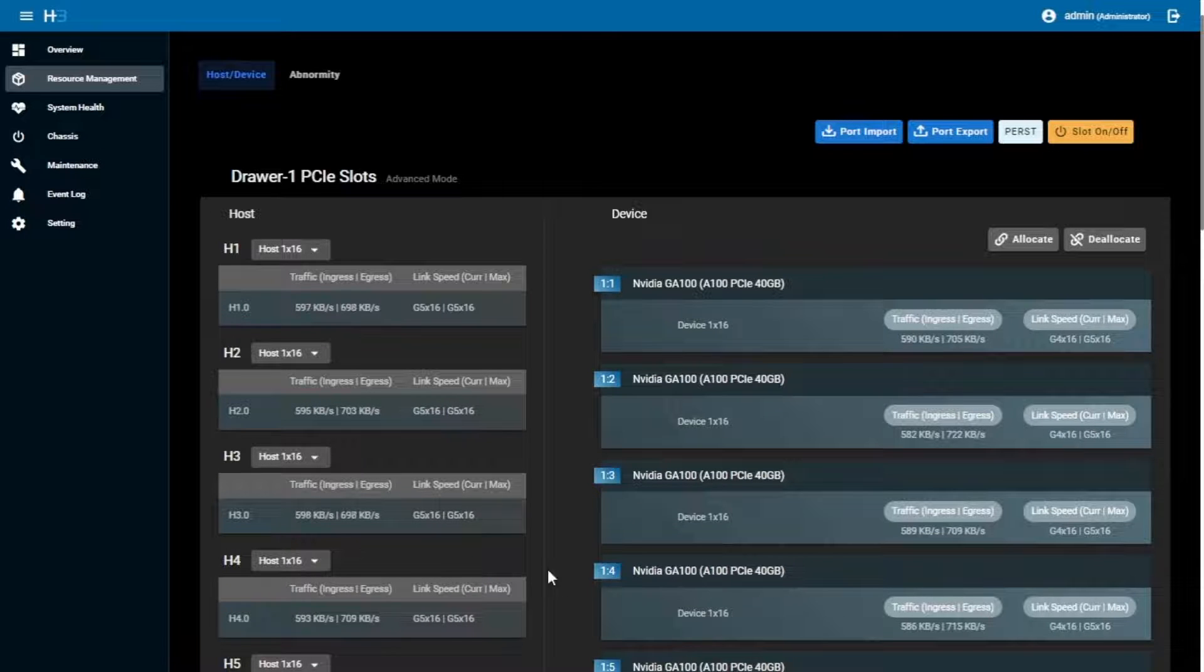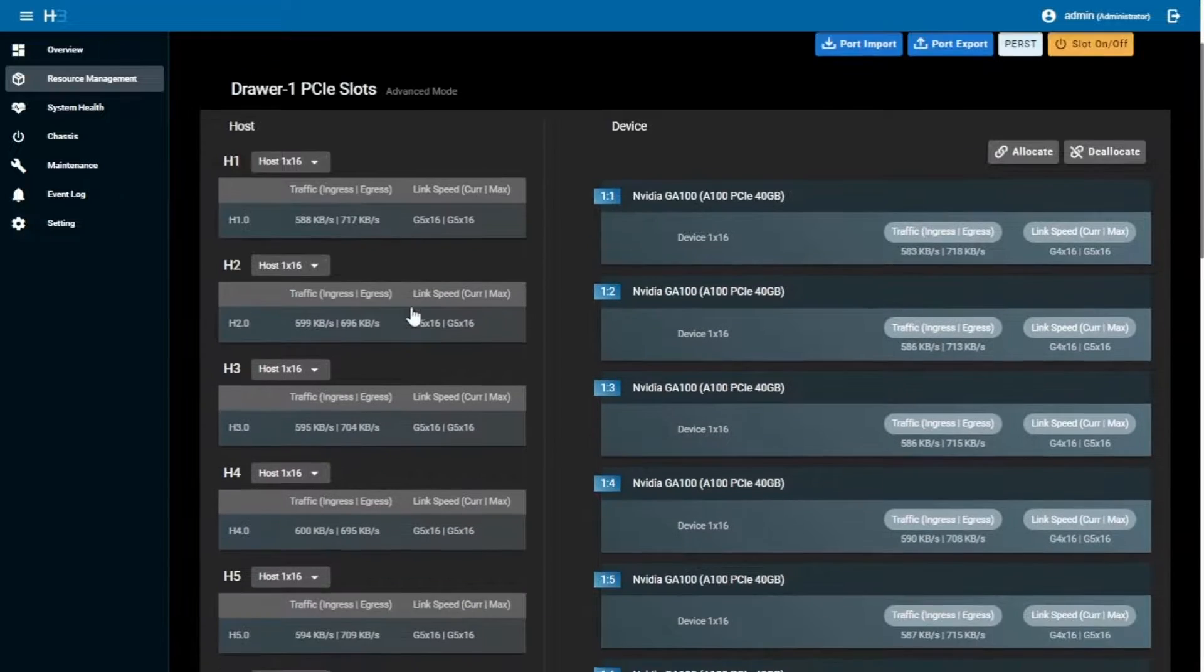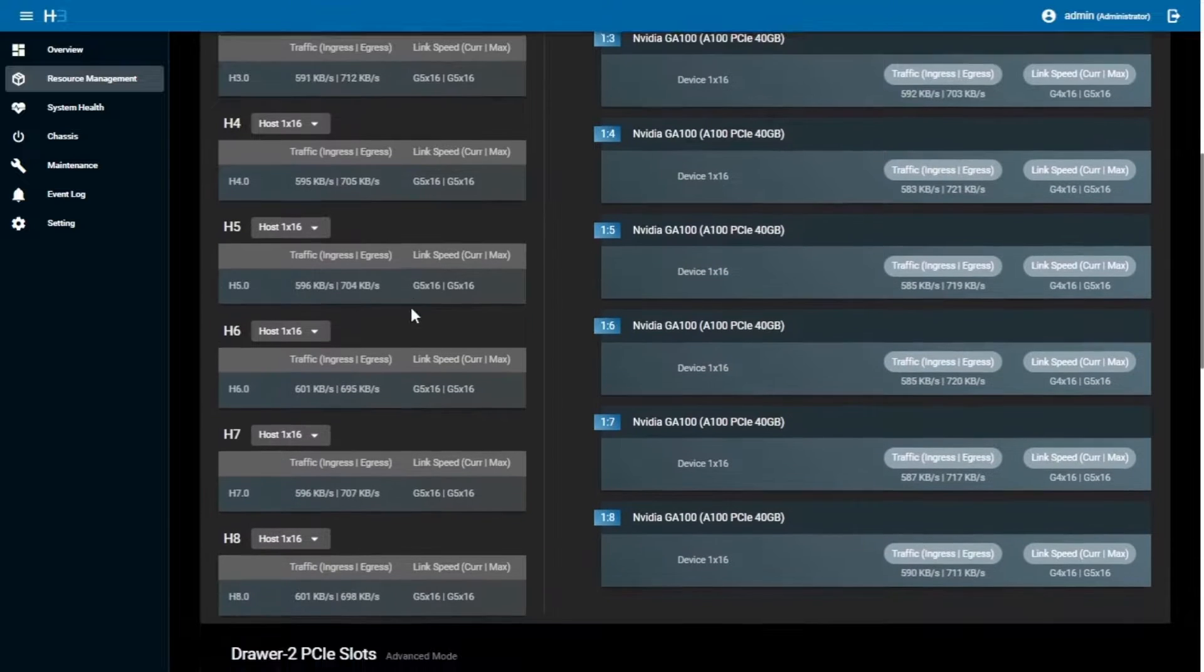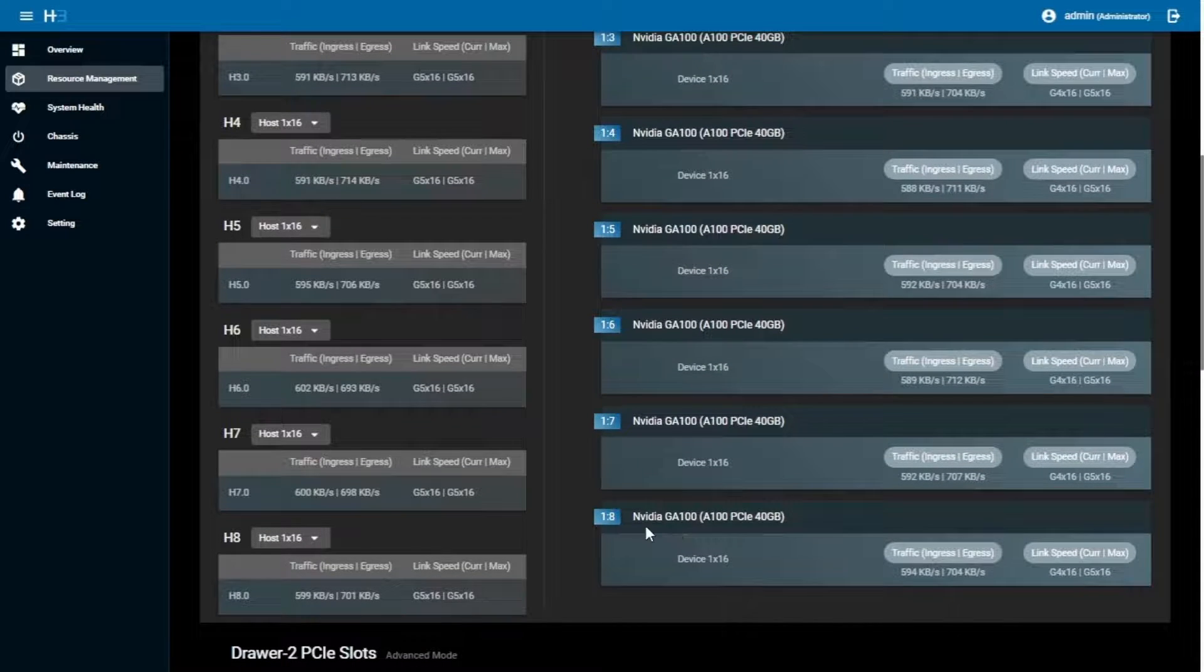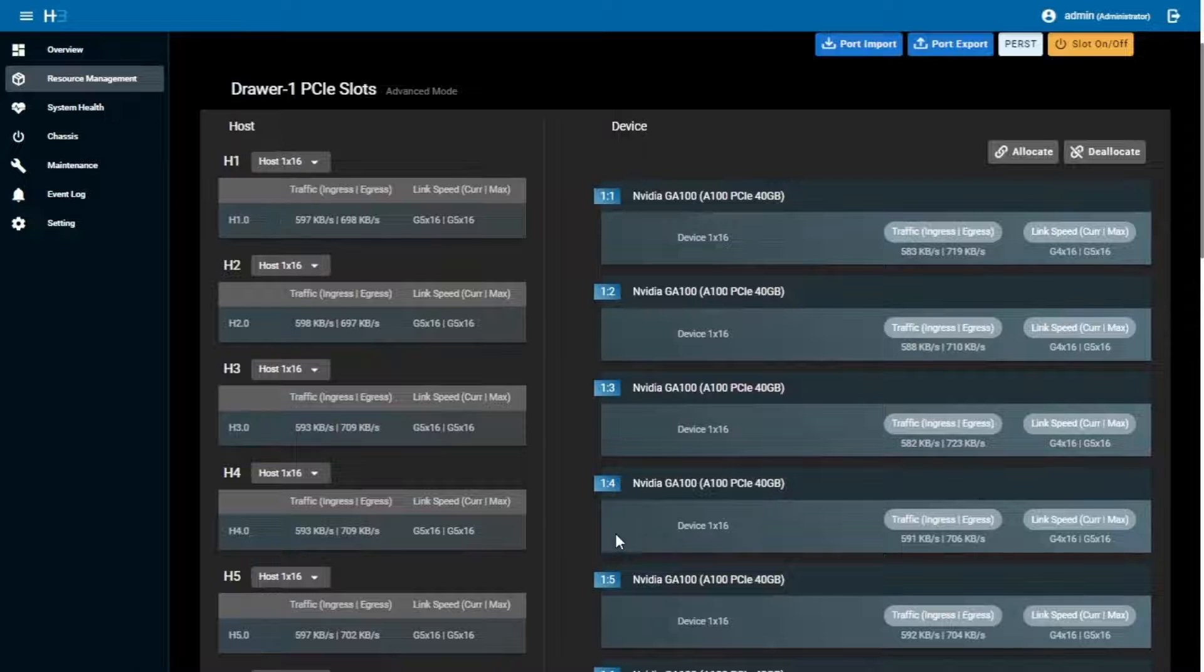Now I'm going to demonstrate how to use our GUI system to manage these resources in this case. This system model is the Falcon Gen5 GPU expansion infrastructure. We know that in this case, the server gets one GPU for inferencing in the morning, eight GPUs for AI computing during the night.